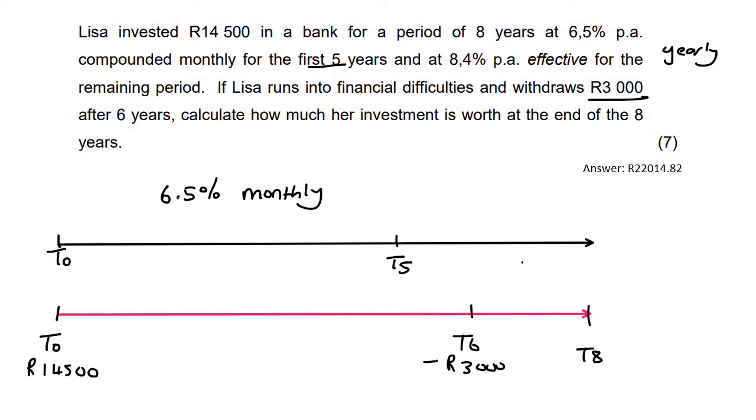Then what happens? Okay, then it changes to 8.4%, and they're saying effective. So that just means like yearly, for example, and that goes all the way up to the end.